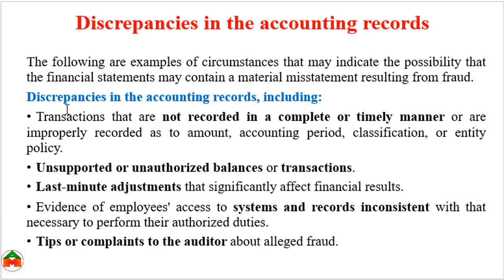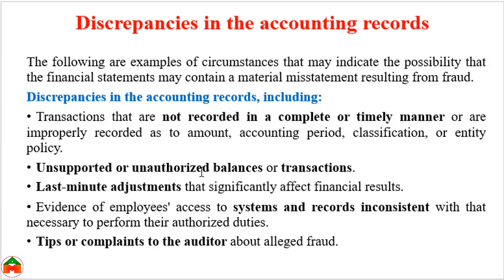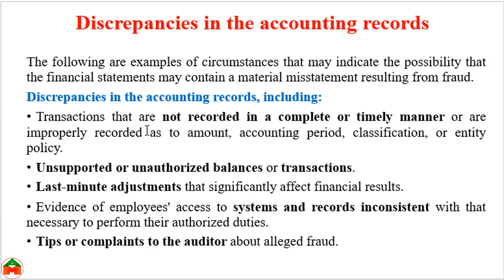The second discrepancy in accounting records is unsupported or unauthorized balances or transactions. If there is any unsupported or unauthorized balance or unauthorized transaction in the recording process, that indicates the possibility of fraud.